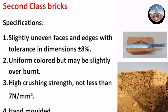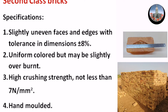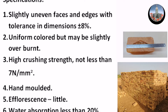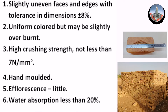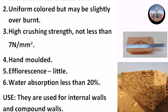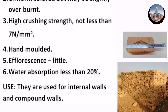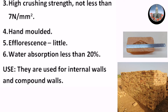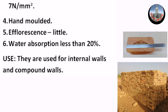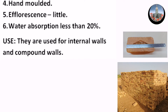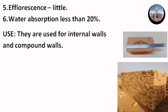Second Class Bricks Specifications: Slightly uneven faces and edges with tolerance in dimensions ±8%. Uniform colored but may be slightly overburnt. High crushing strength, not less than 7 N/m². Hand molded. Efflorescence nil. Water absorption less than 20%. Use: They are used for internal walls and compound walls.